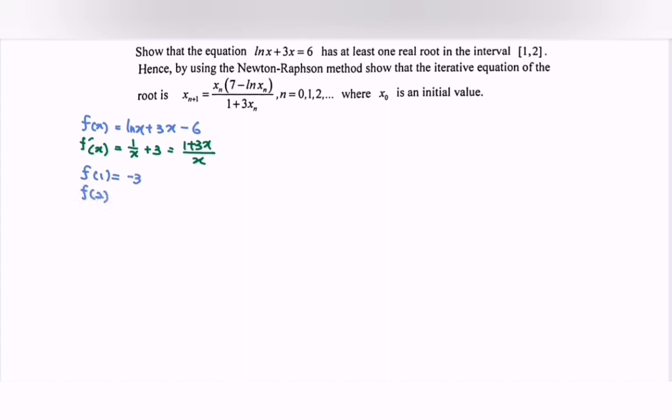Continue, f(2). Then we will have 0.69. So we have the opposite sign. Opposite sign shows that f(x) has at least one real root in the interval [1, 2].